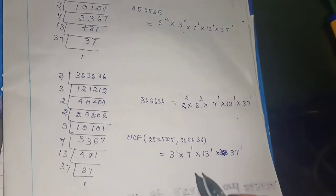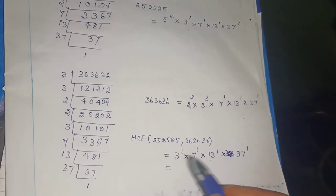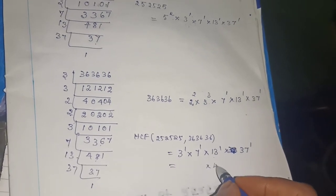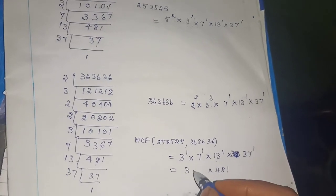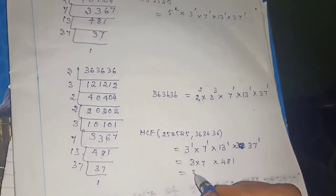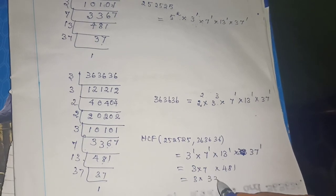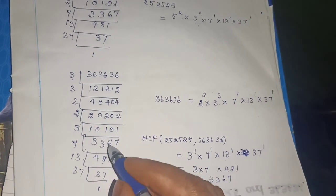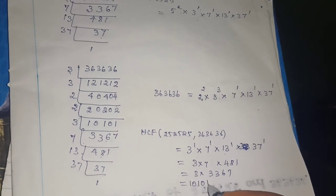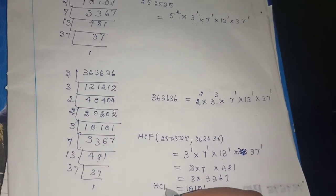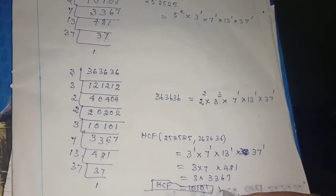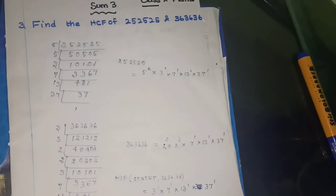You have to multiply and find out. What is 37 into 13? 37 into 13 is 481. So 3 into 7 into 481. 481 into 7 - this number. So 3 into 3367. The HCF of these two numbers using the fundamental theorem of arithmetic is 10101. This is the answer.